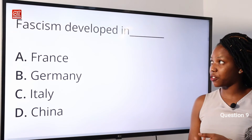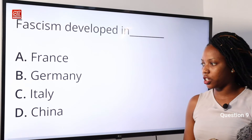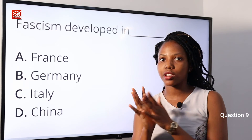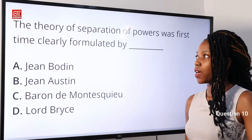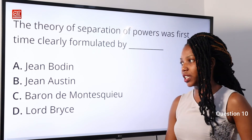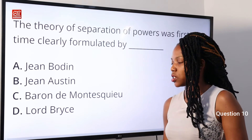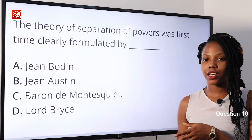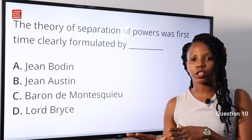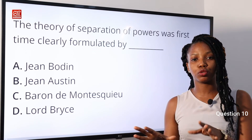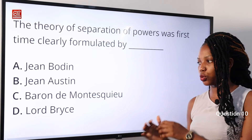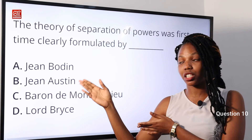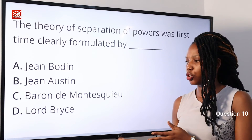Question 9: Fascism developed in — A: France; B: Germany; C: Italy; D: China. Fascism was developed in Italy under Benito Mussolini. Option C is the correct answer. Question 10: The theory of separation of powers was first clearly formulated by — A: Jean Bodin; B: Jane Austen; C: Baron de Montesquieu; D: Lord Bryce. The answer is C — Baron de Montesquieu, who published his book 'The Spirit of the Laws' in which he discussed separation of powers. Option C is the correct answer.